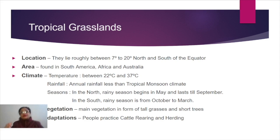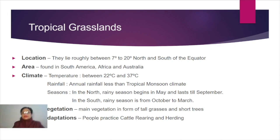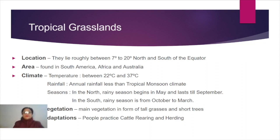The rainfall received in this region is relatively less — around 50 to 75 centimeters, with a maximum of about 90 centimeters. Because rainfall is less, the only type of vegetation that can grow here is grasses. This amount of rainfall is not sufficient for any forests to develop, and that is why the natural vegetation found here is only grasses.